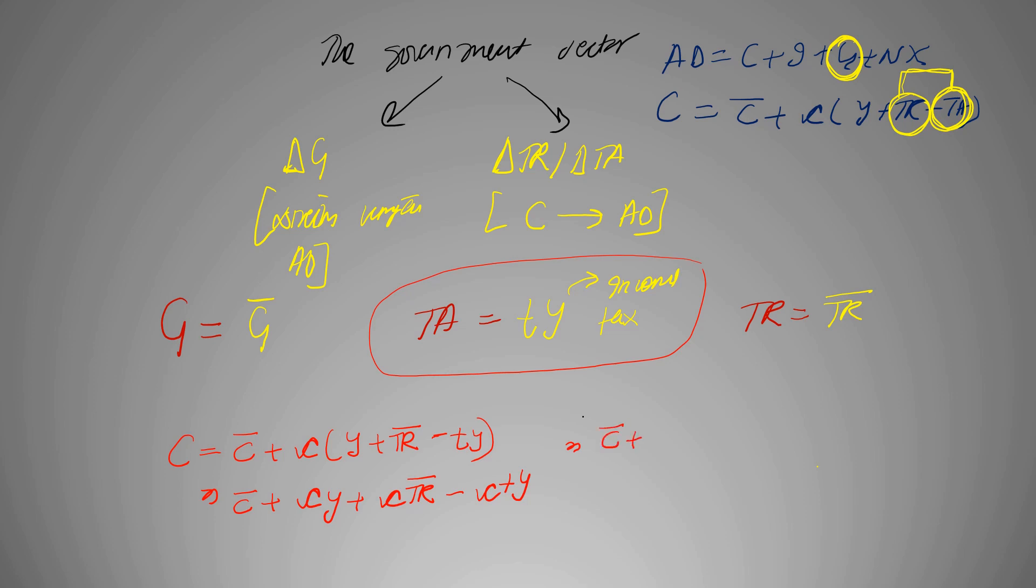Right, now if we take both exogenous terms or variables together, we can write these two as A bar. So A bar plus C(1 minus T)Y, and this is a new consumption function.